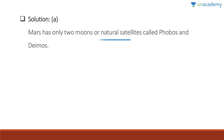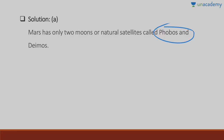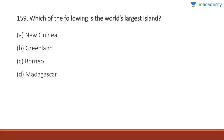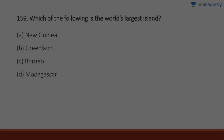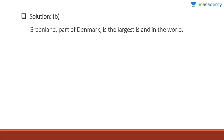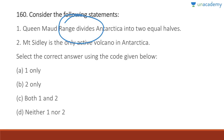Question 159: The world's largest island is Greenland. Greenland is the world's largest island and is part of Denmark.